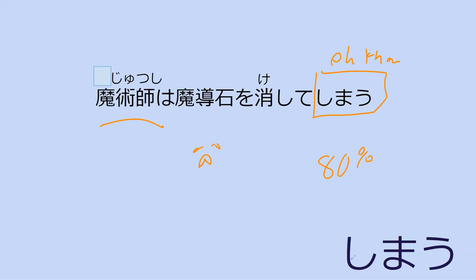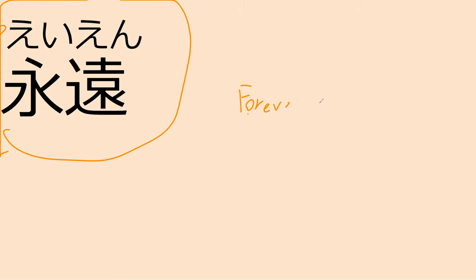For example, a character in anime will sometimes say しまった when someone gets away while they're chasing them. It's not really 'oh no, I accidentally didn't catch them' — it's more like 'darn it, I didn't do it.' So a lot of times it'll be translated as 'darn it.' Do you know what 永遠 means, just in case you've seen it in anime? It basically means forever, for eternity.